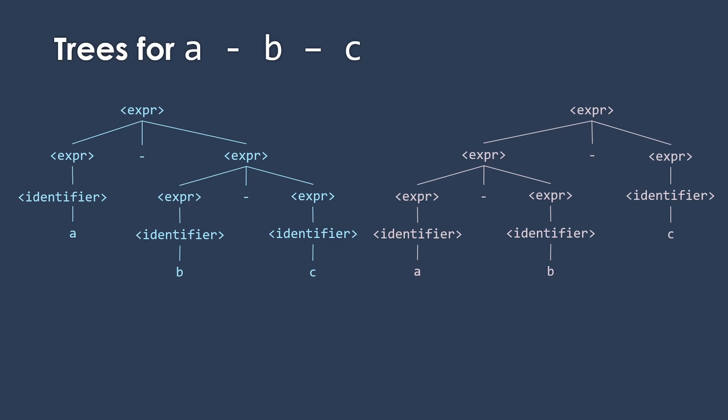We can take the root expression. In either case, we're going to break that into an expression minus an expression. But then we have a choice. We could take the first expression and turn that into an identifier. The second expression then would become expression minus expression. Or we could take the first of the expressions and do the expression minus expression, and then the second one we would turn into the identifier. Now you might think, does it really matter? I mean, they don't look that different. But let's see.